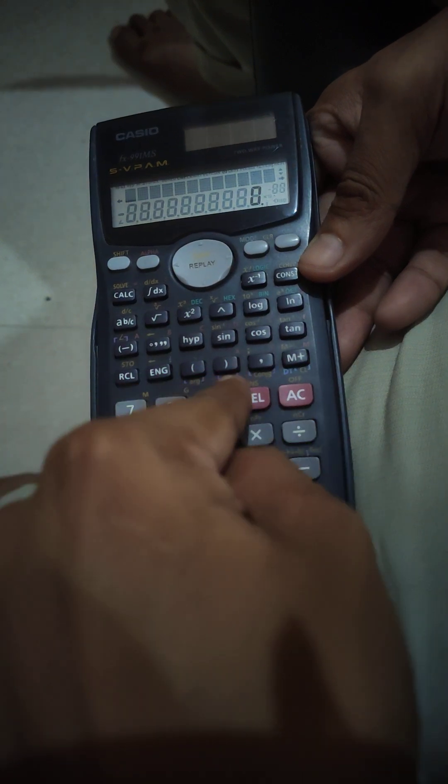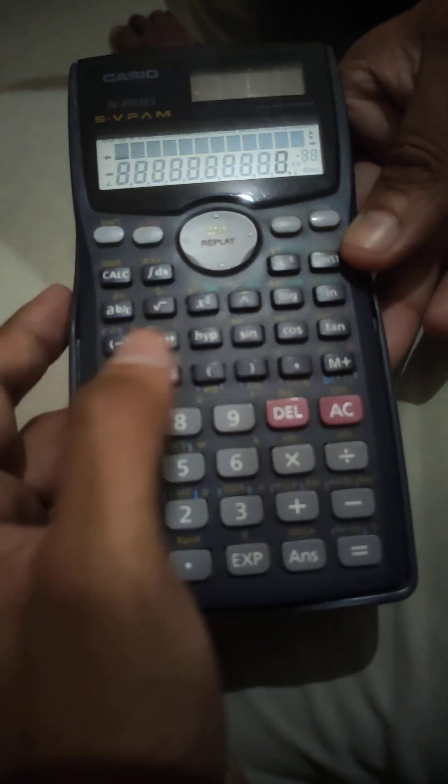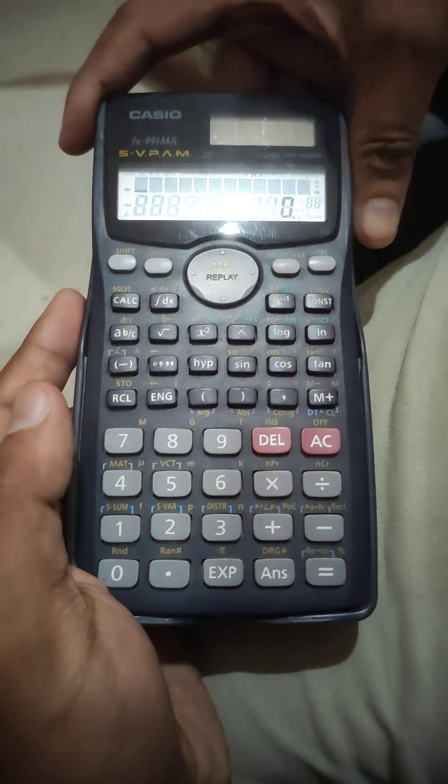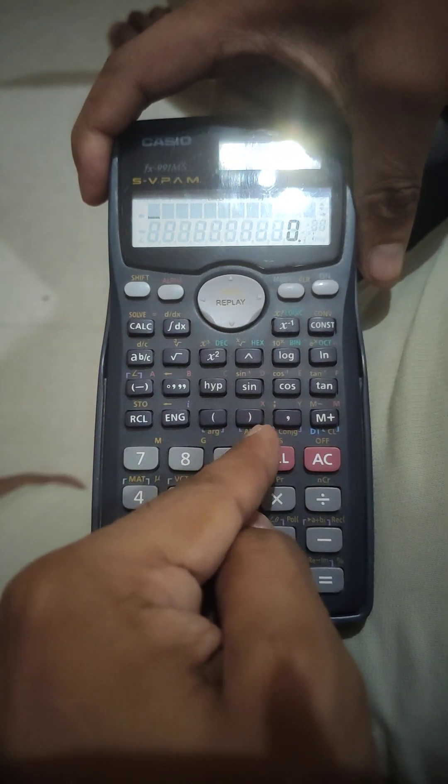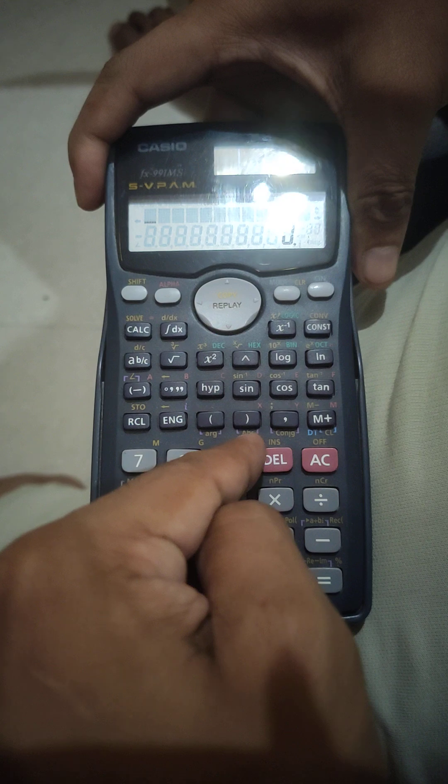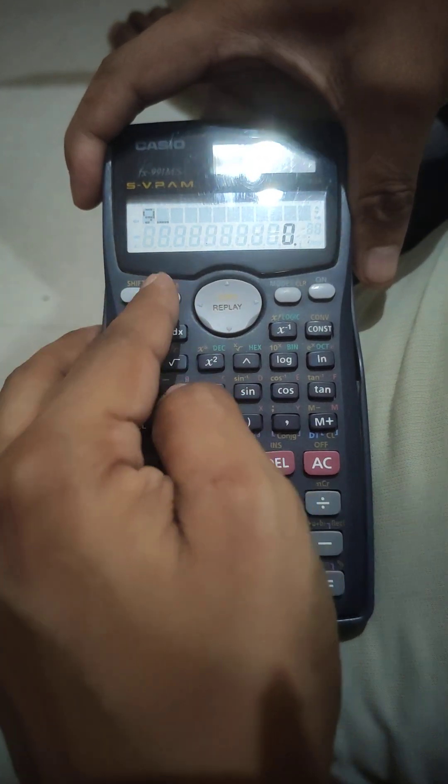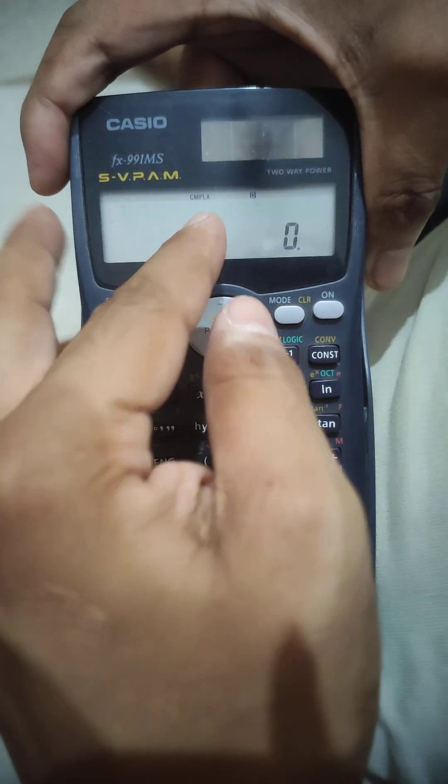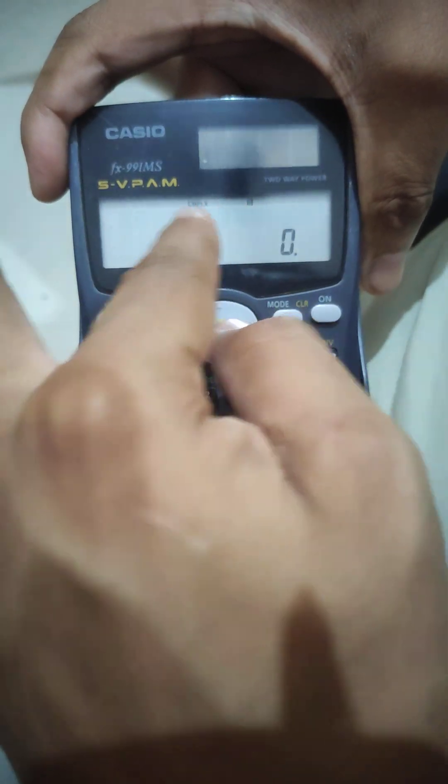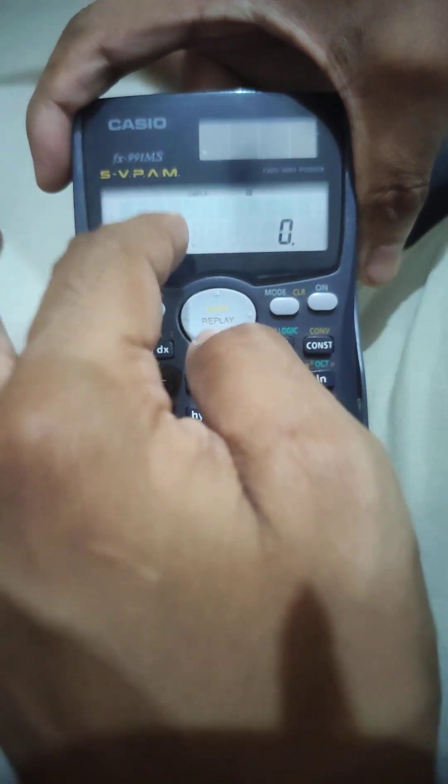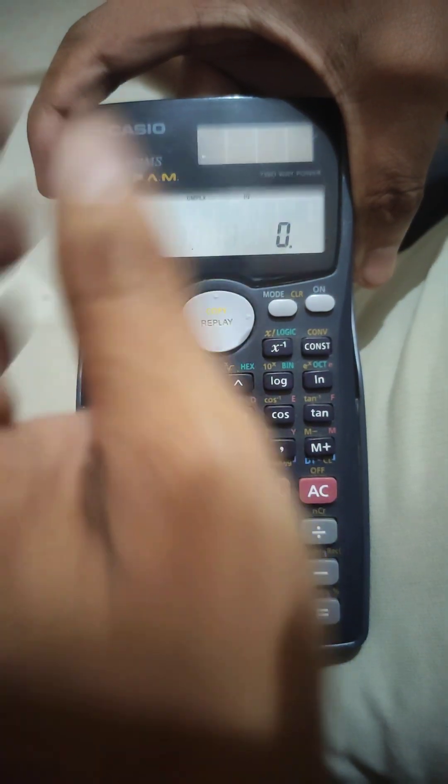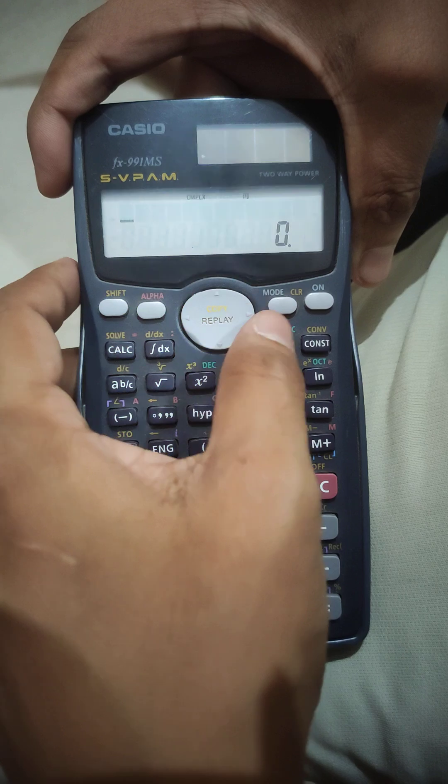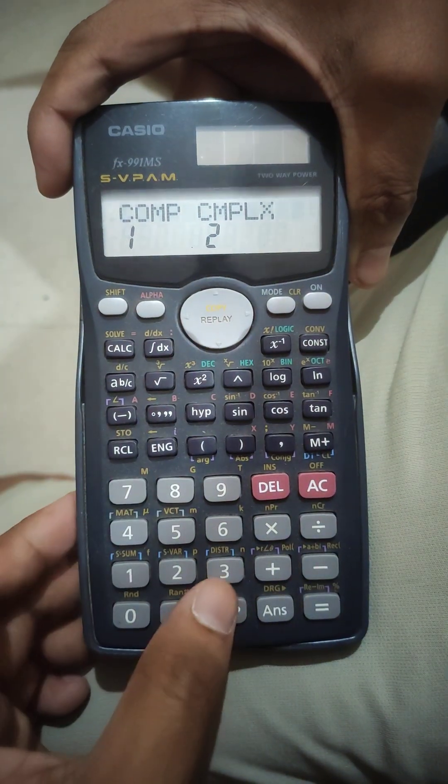As you can see, this is the absolute button. Sorry, my autofocus is going up. First you need to keep your calculator in the complex form. If you do not know how to do this, then you can check my previous video. It's actually very simple: press the Mode and then press 2 to select the complex.